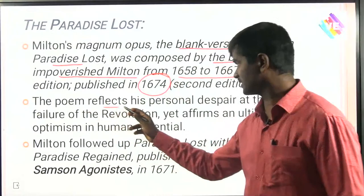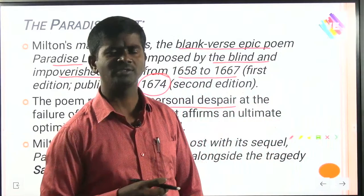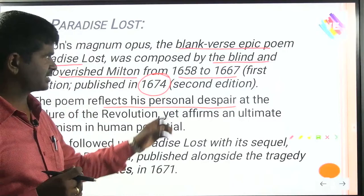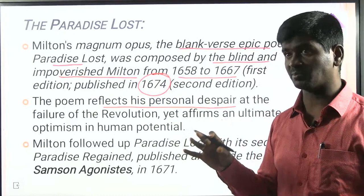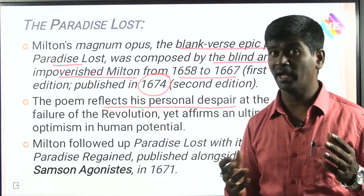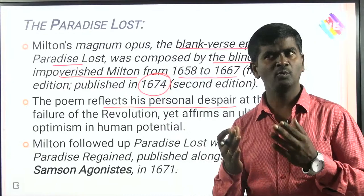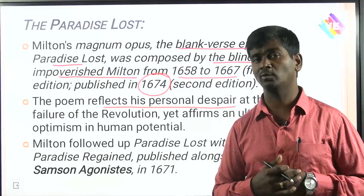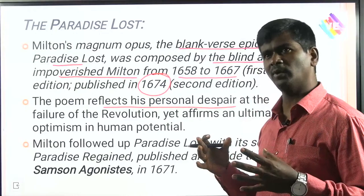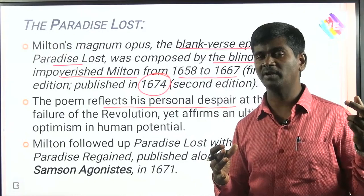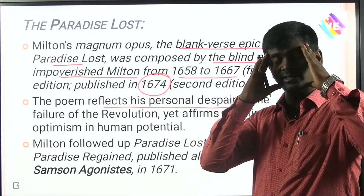The poem reflects his personal despair, sadness, and sorrow. Before 1660, Milton was an active member of the Puritans and Protestants, fighting for the Commonwealth and Parliament. But after the death of Cromwell, the intellectuals of England invited Charles II to take the throne. What Milton expected before 1660 was paradise — but after Charles II became ruler, that paradise was lost. Hence the title Paradise Lost reflects the failure of the Puritan revolution.